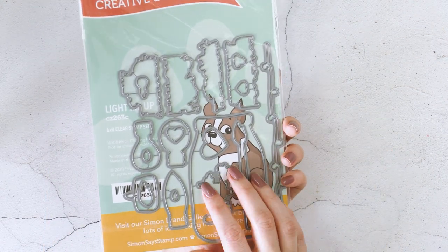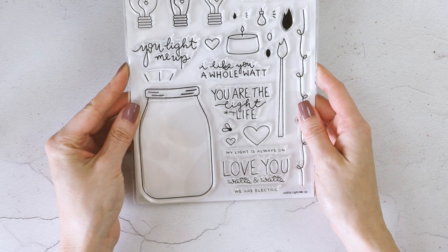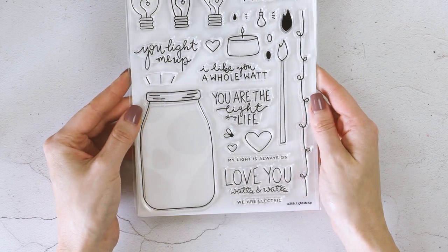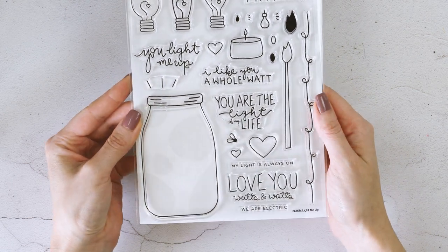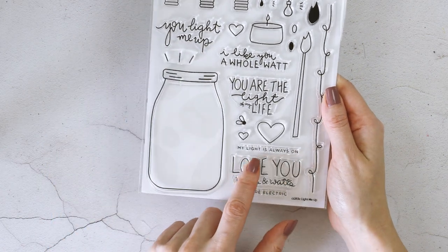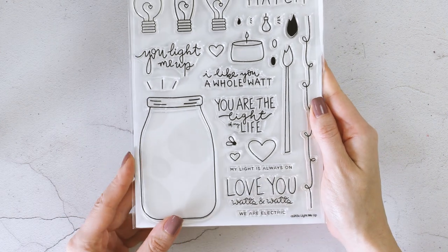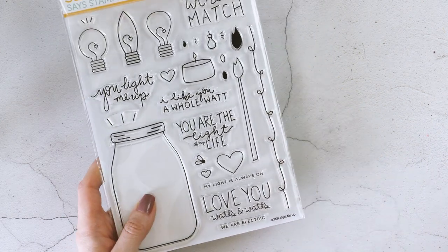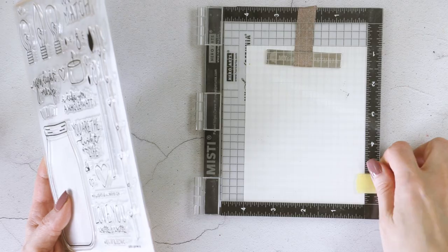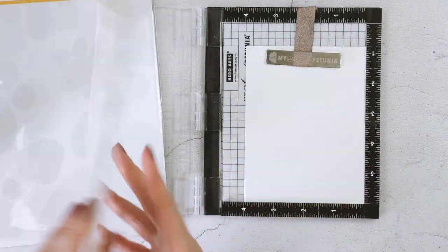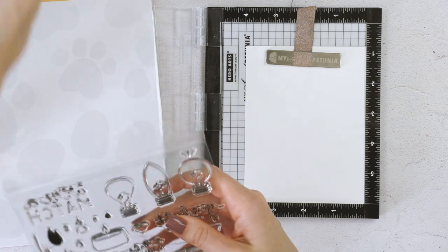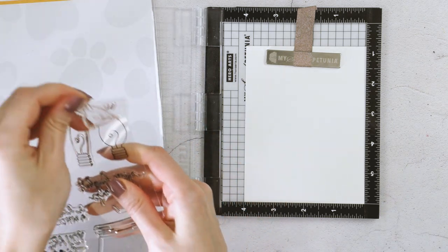It also has several images of light bulbs in different shapes. There are additional images in this set but we will just be using the light bulbs for the cards that I have in mind today. This stamp set has coordinating dies available, they are sold separately, and I encourage you to pick up the dies as well. They not only cut the images but also the sentiments from this set.